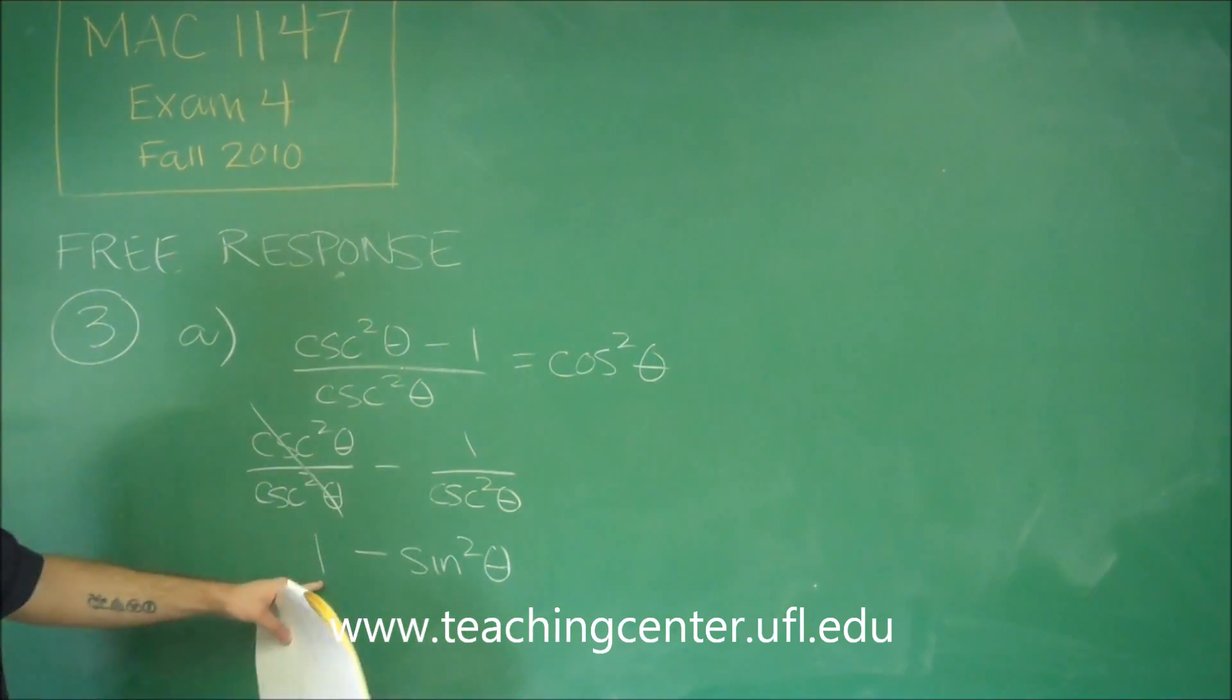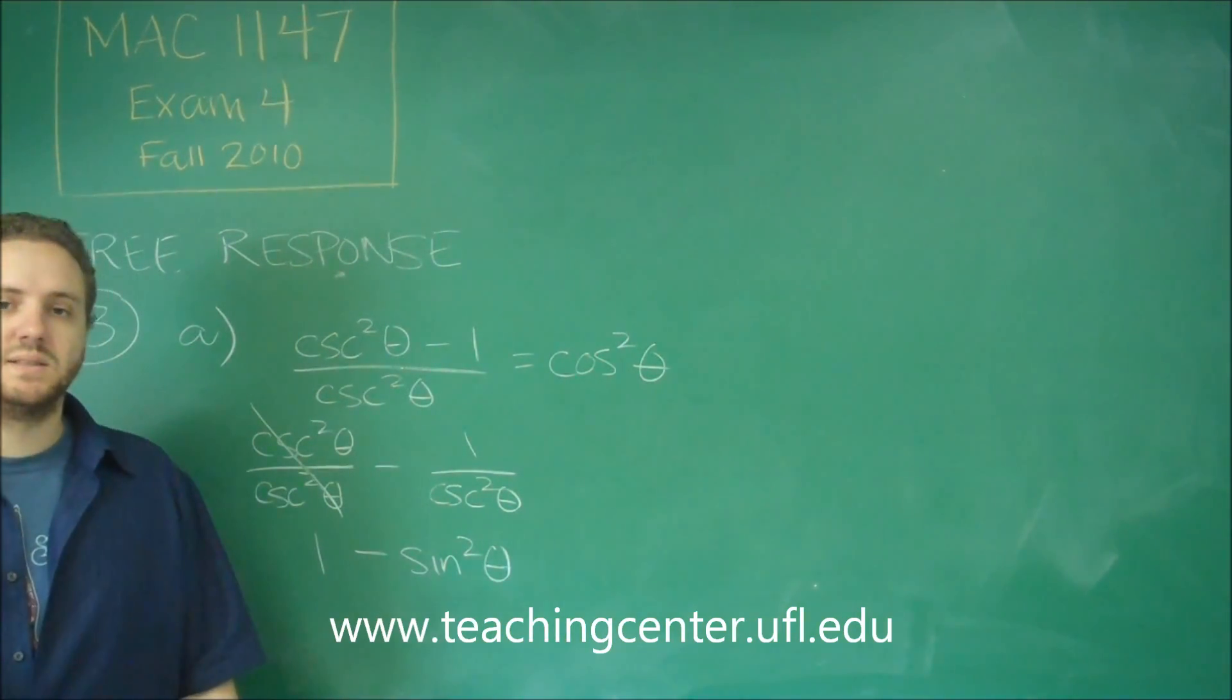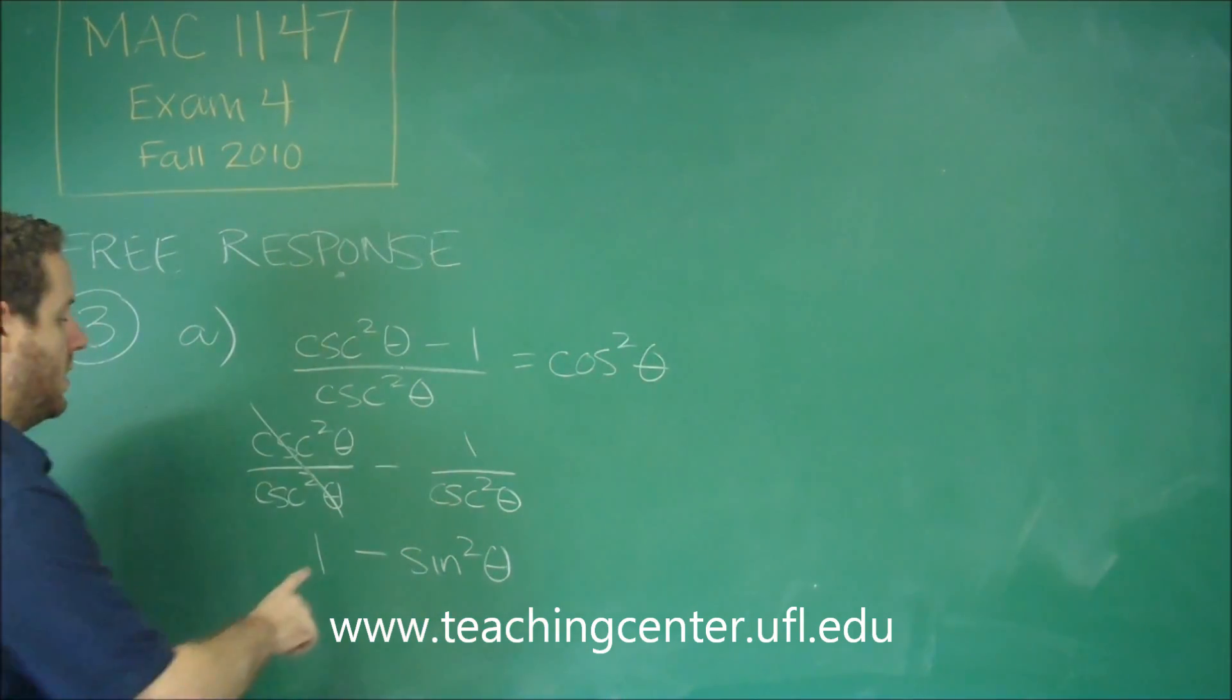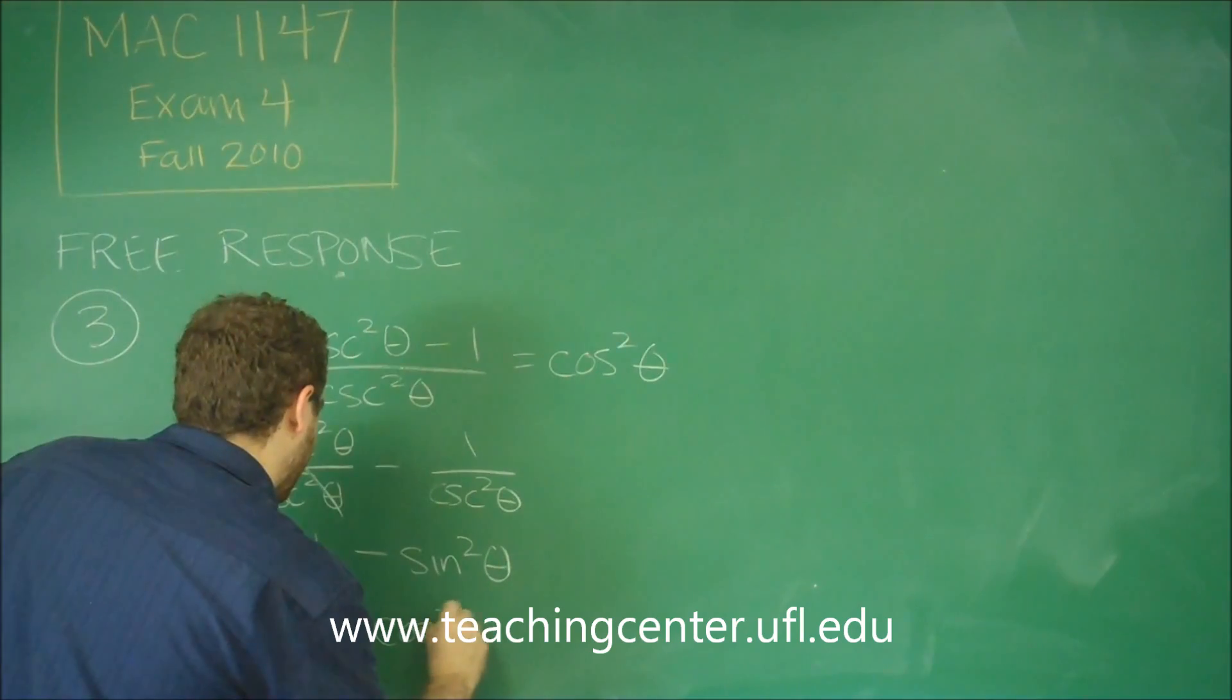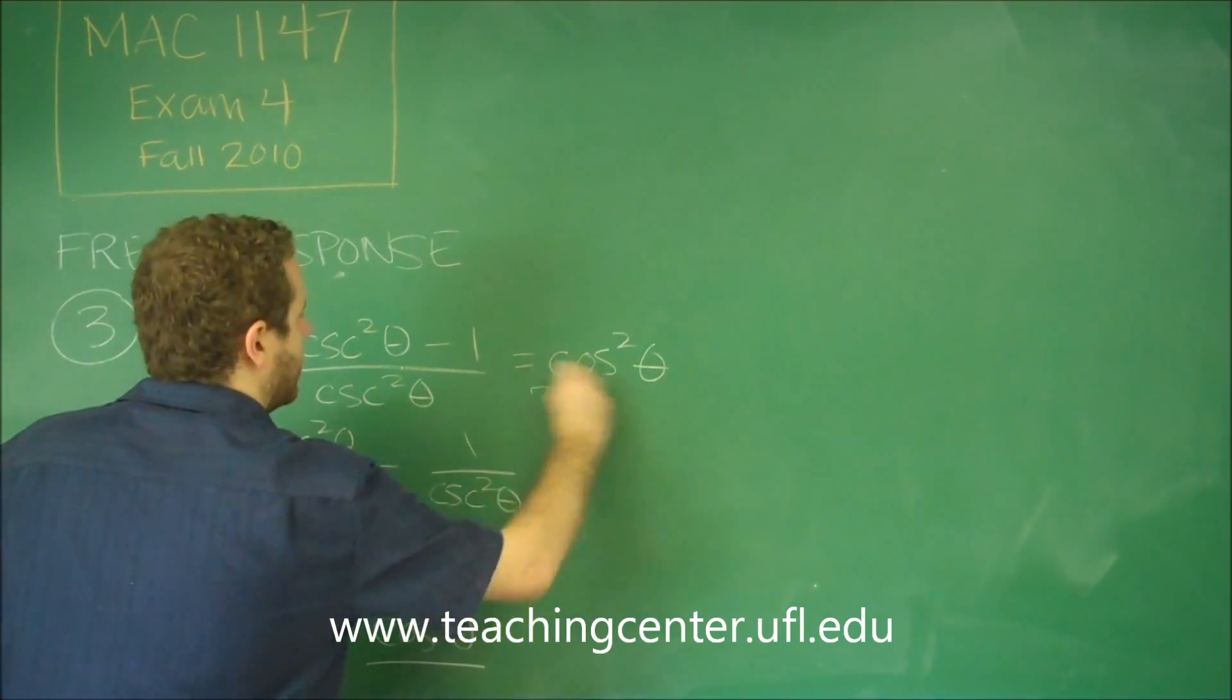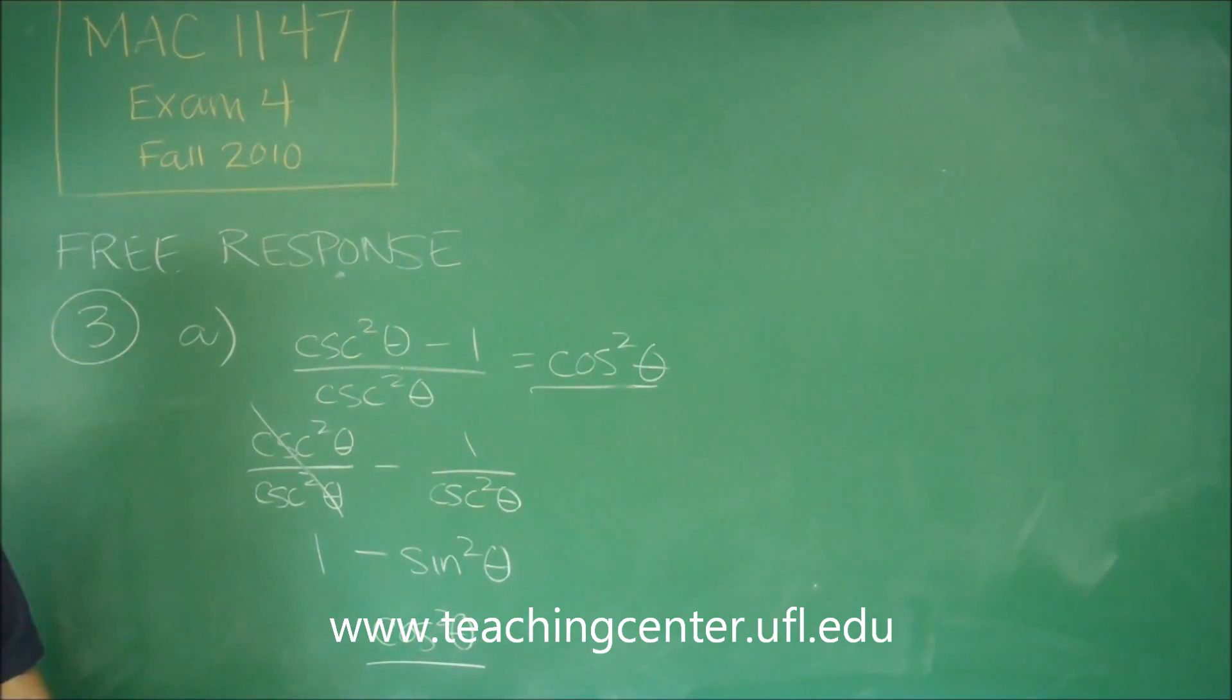And you can see here that this is your Pythagorean identity. Since sine squared plus cosine squared equals one, one minus sine squared is just cosine squared. And that is the same thing as what that was supposed to be.